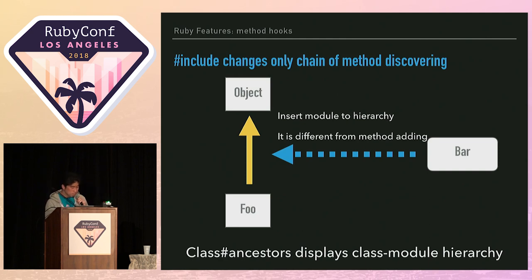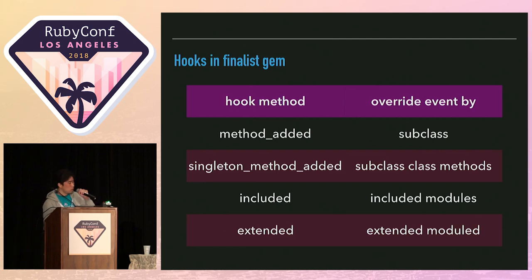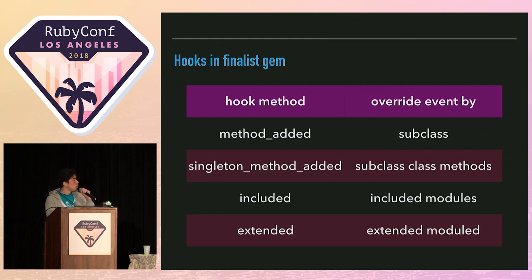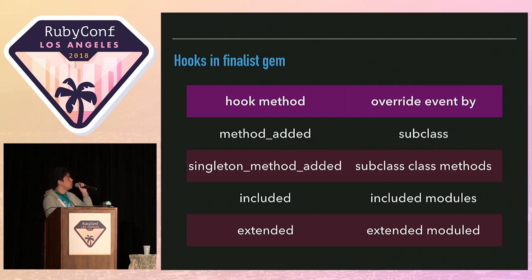It's important. The class ancestors method displays the class and module hierarchy. For this reason, finalist gem uses many hooks to cover various cases: method_added to detect override by subclass, singleton_method_added to detect override in singleton class, and include and extend as well.